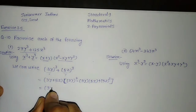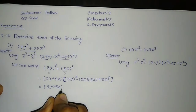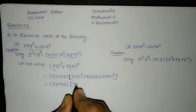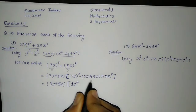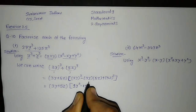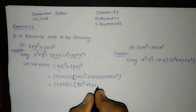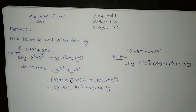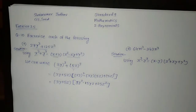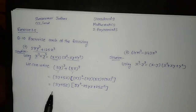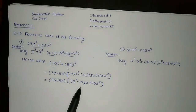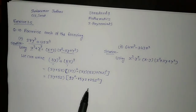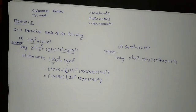That is equal to 3y plus 5z, as it is, into another bracket. We will do the squaring: 3 square is 9, so 9y square, minus 3 times 5 is 15, so 15 into y into z, plus 5 square is 25, so 25z square. There is nothing more to simplify, so this is the final answer: 3y plus 5z into another bracket 9y square minus 15yz plus 25z square. This is how you factorize 27y cube plus 125z cube.